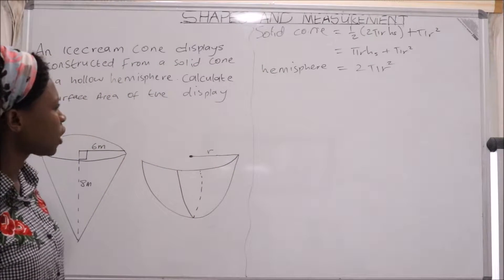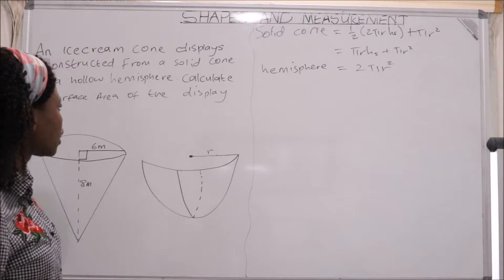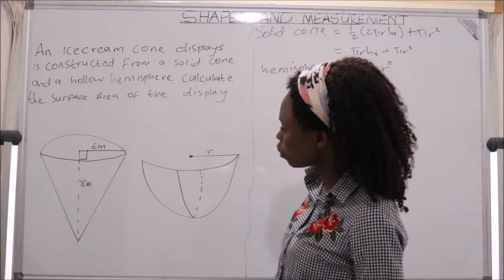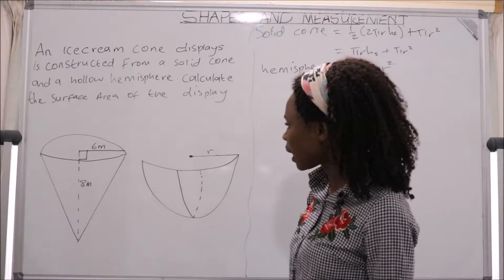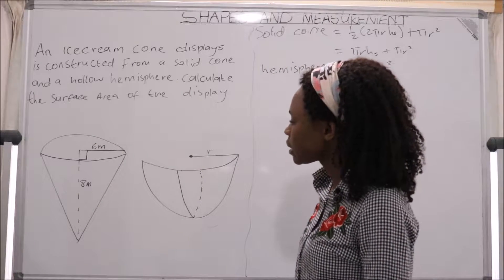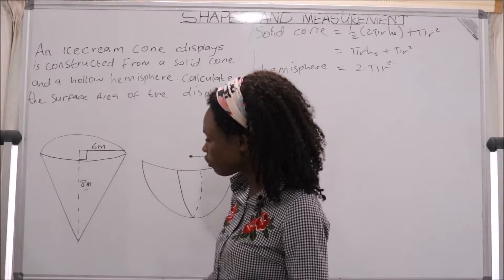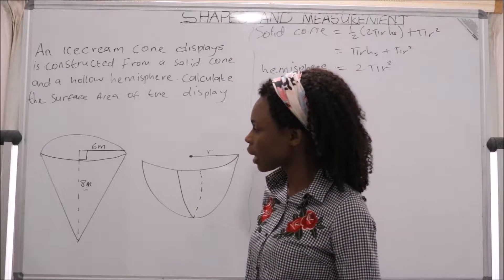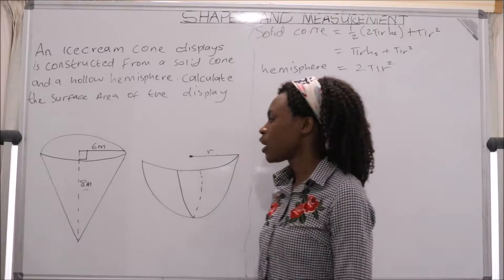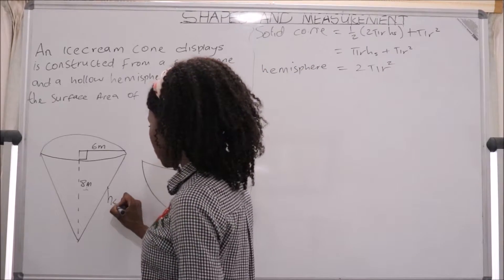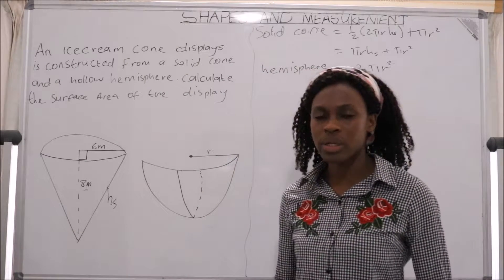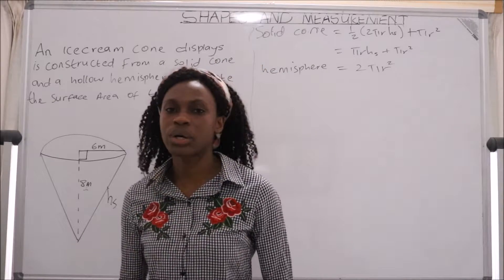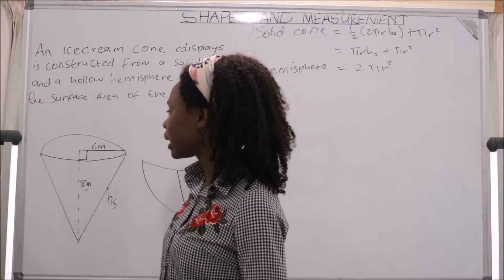Now having those two equations, those are our study steps to answer the question at hand. We are given a cone and a hemisphere — the hemisphere is the closing part of the cone. We have a height of 8 meters and a radius of 6 meters, which is the adjacent side of the right-angle triangle.